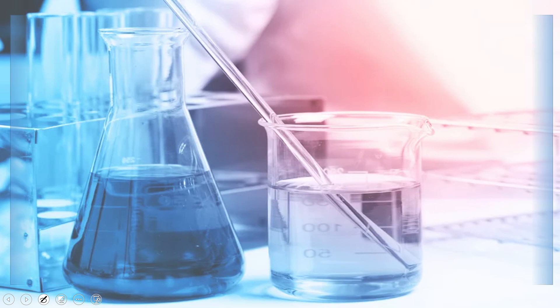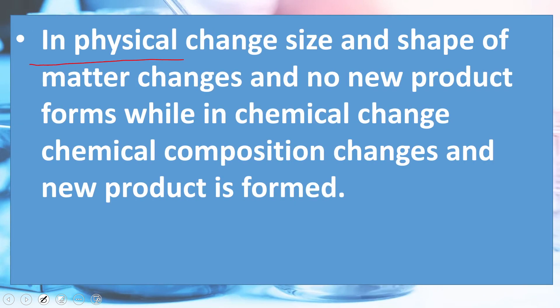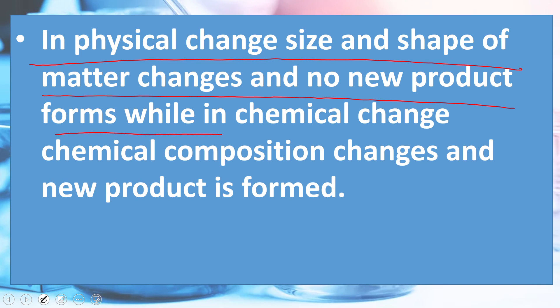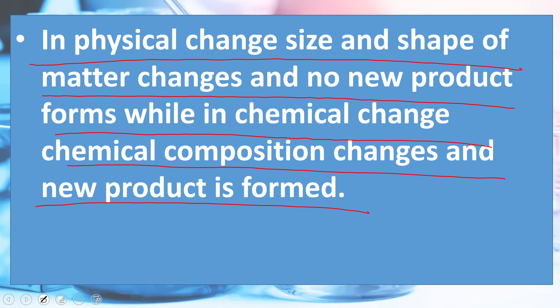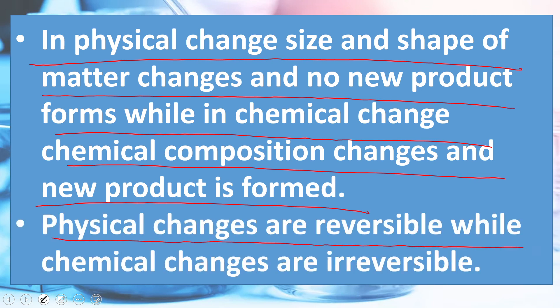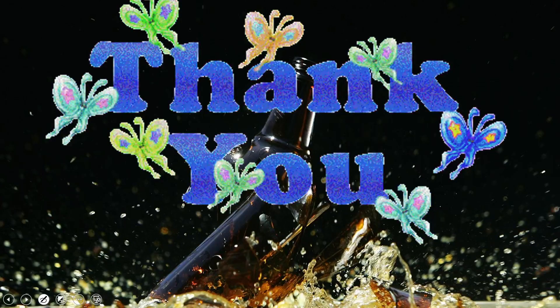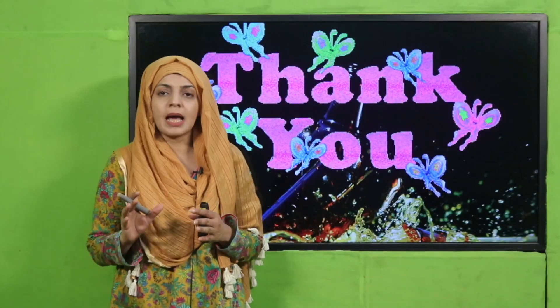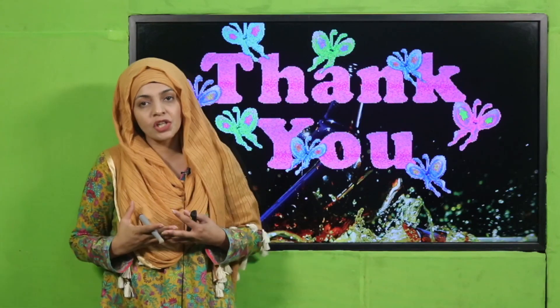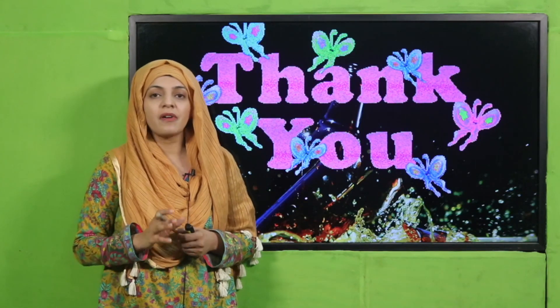Wrap up: today we have learned that in a physical change, the size and shape of matter changes and no new product forms, while in a chemical change, the chemical composition changes and a new product is formed. Physical changes are reversible whereas chemical changes are irreversible. I hope you now completely understand the difference between chemical and physical changes. Keep everybody around you safe, have a good day, thank you so much, and Allah Hafiz.